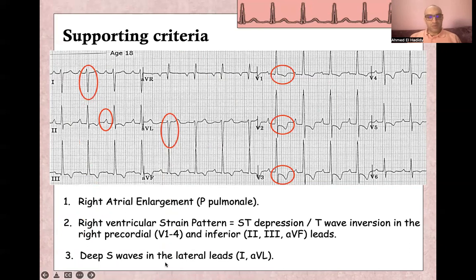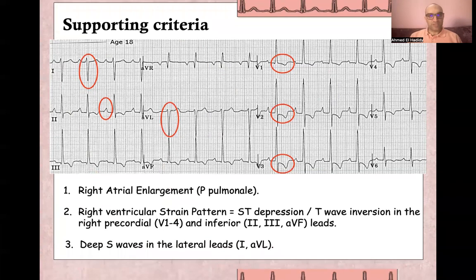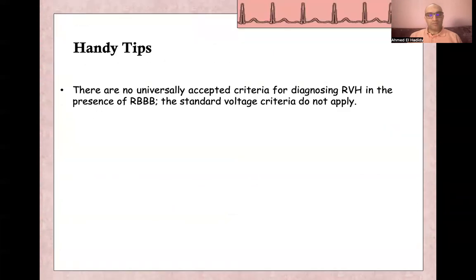And deep S wave in lateral leads like lead one and lead aVL. These are the supporting criteria. A handicap in right ventricular hypertrophy is that there is no accepted criteria for diagnosing right ventricular hypertrophy in the presence of right bundle branch block.